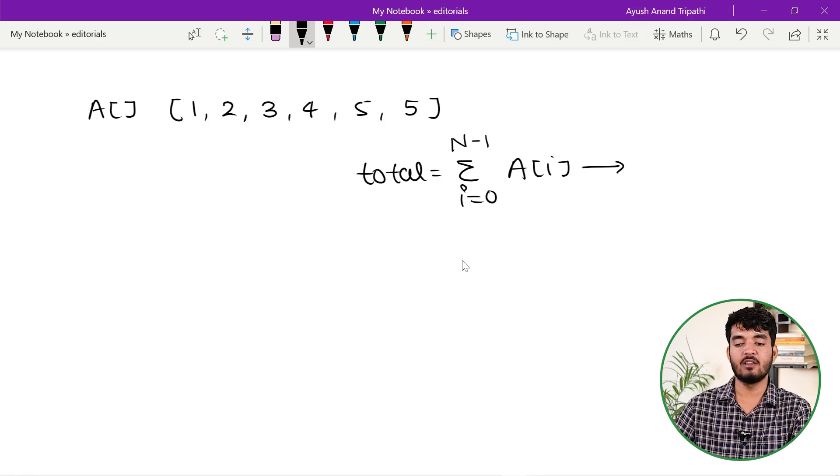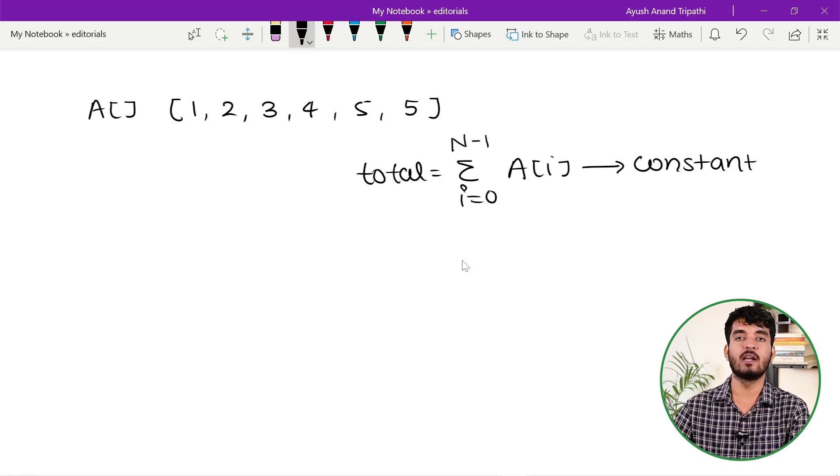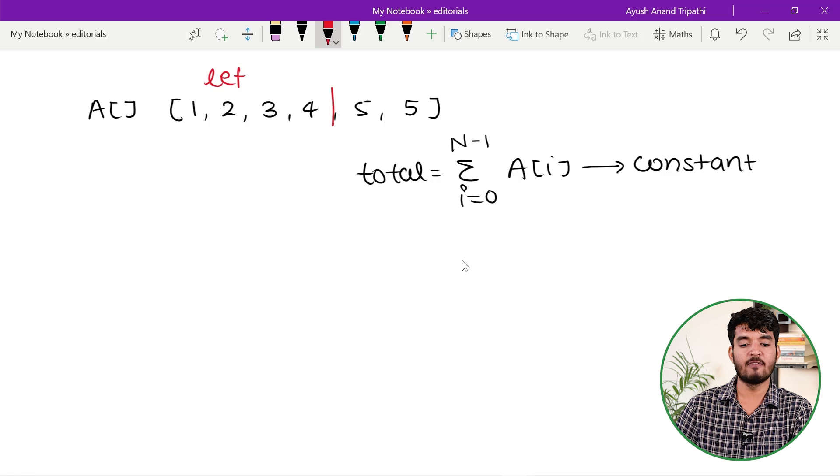This total is constant. We are not allowed to change the value of any index. We have to split this entire array into two halves such that the sum of the left half is equal to the sum of the right half.